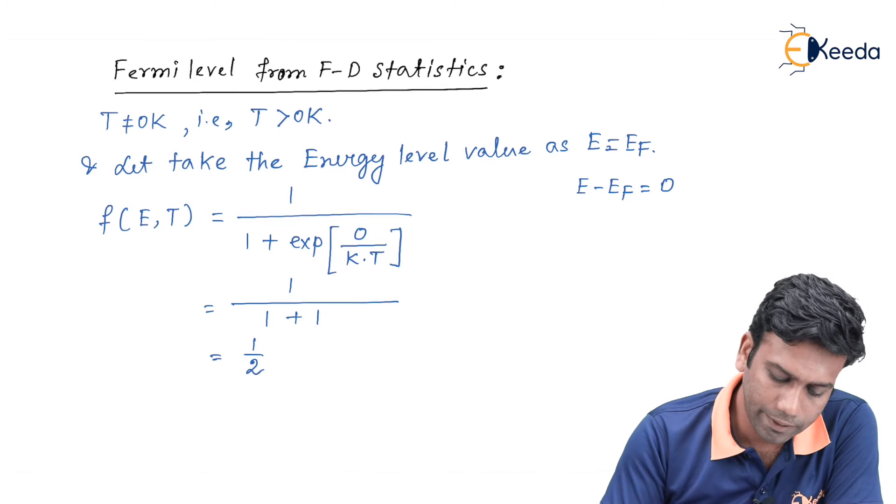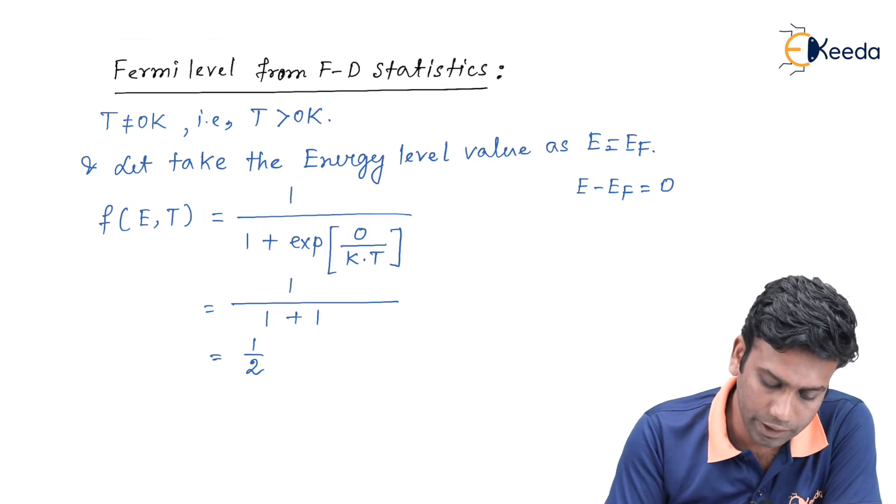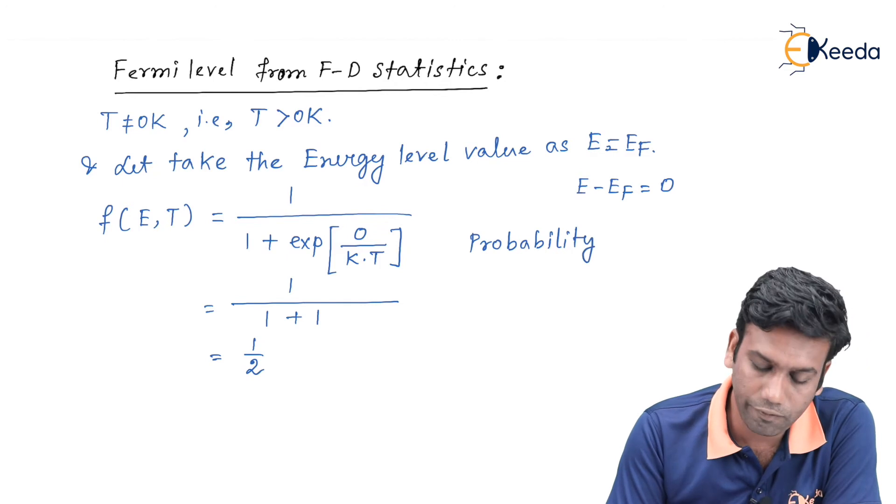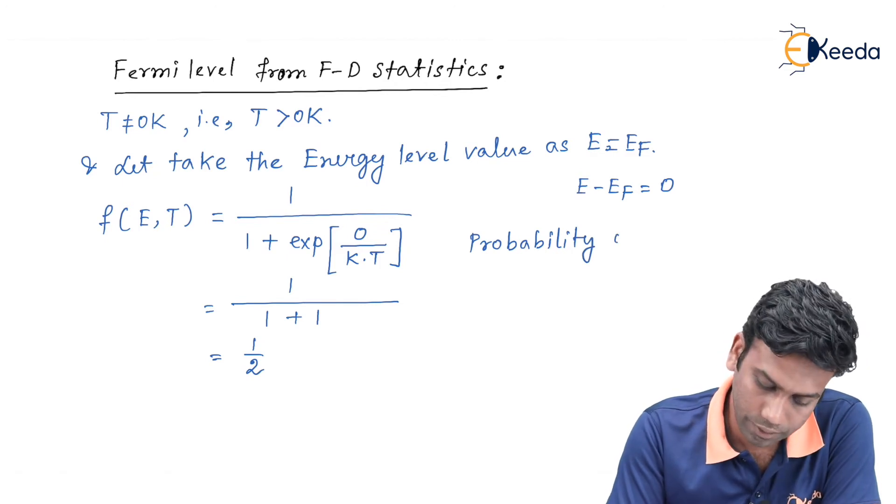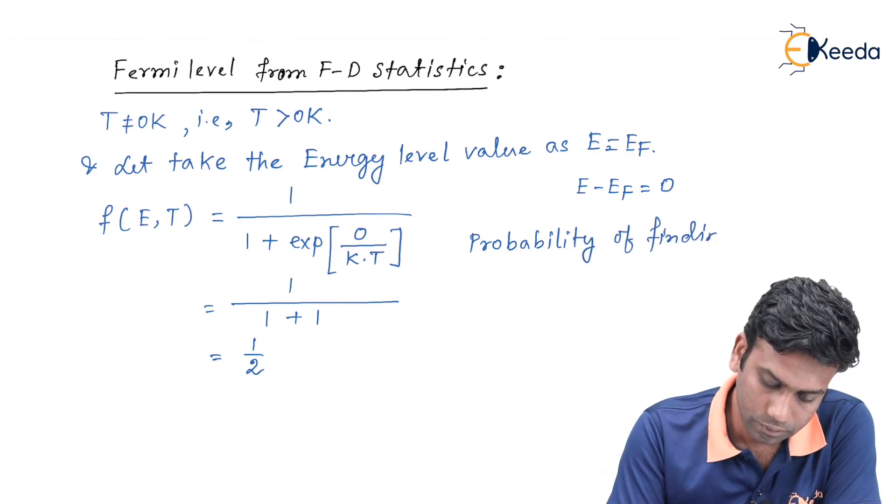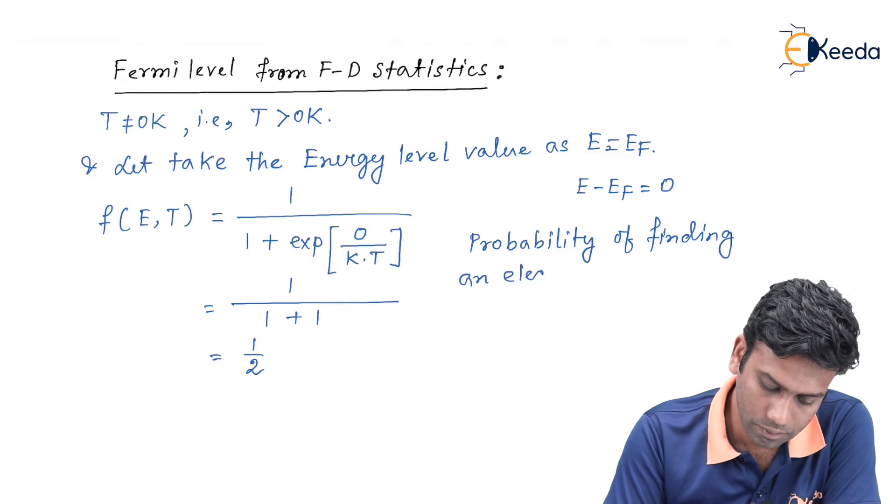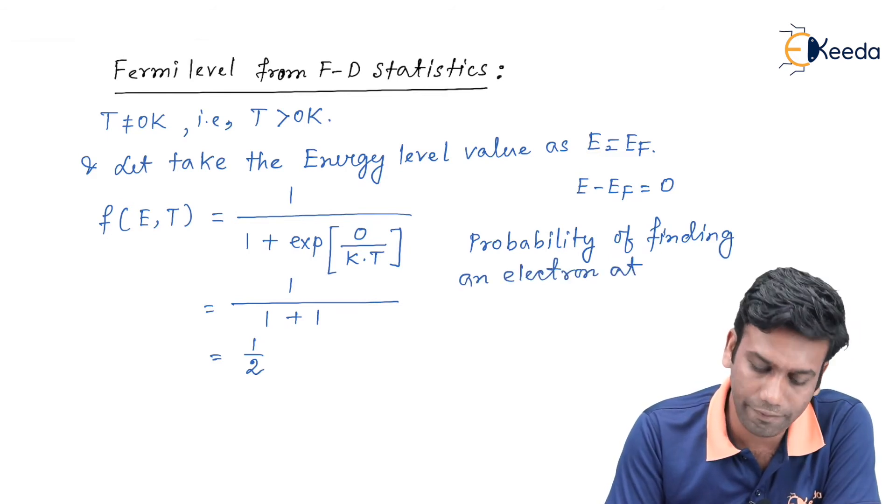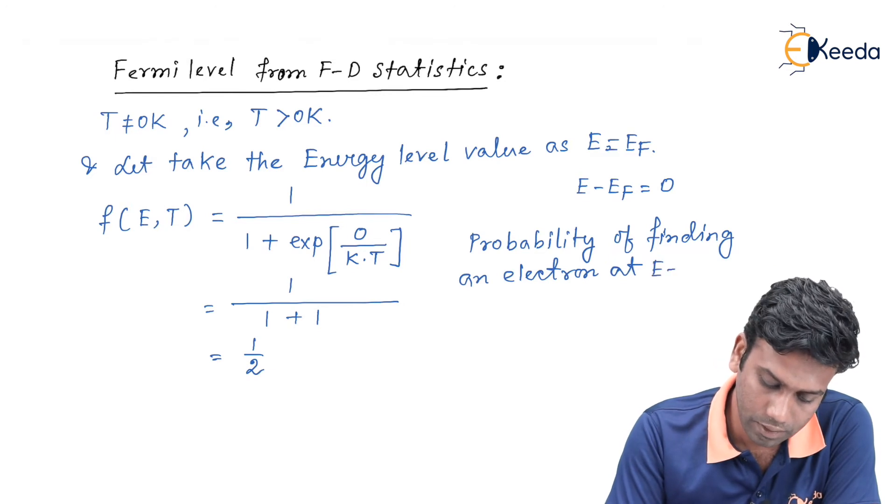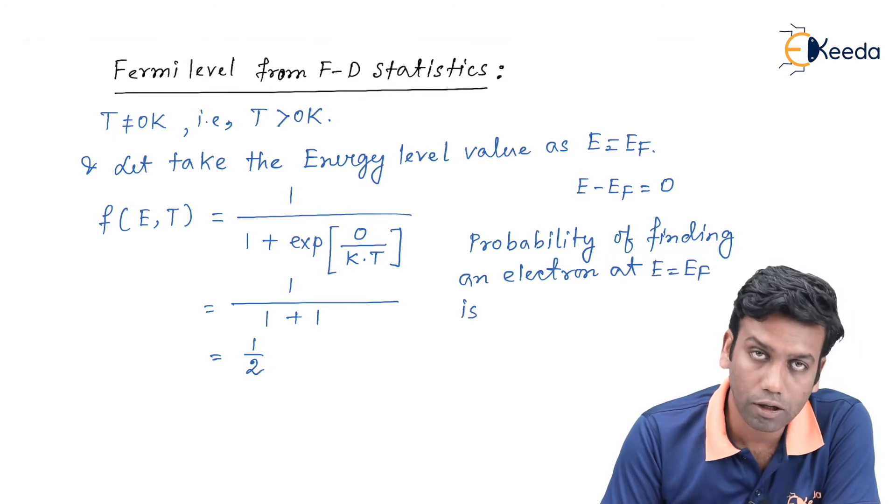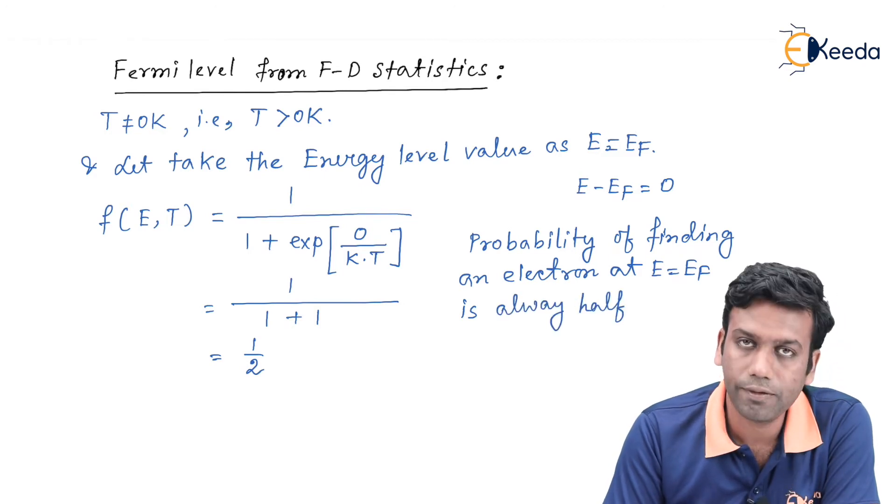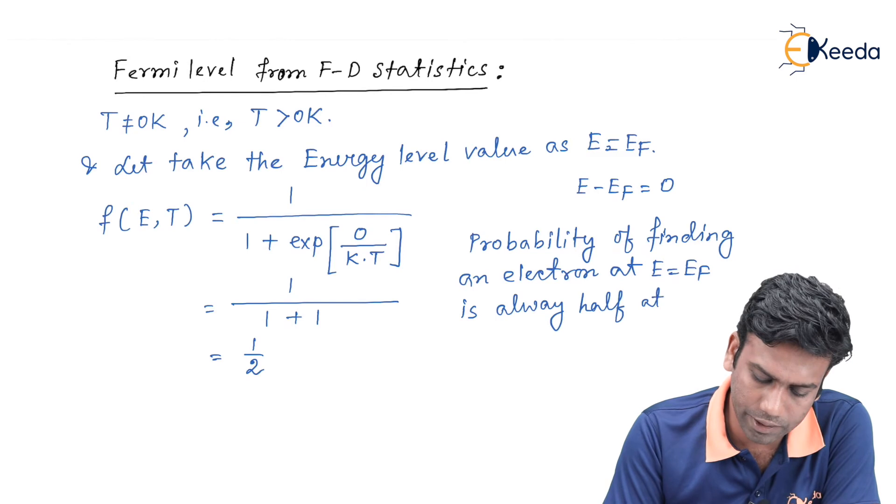We can say that the probability of finding an electron at the energy level Ef is always half at any given temperature.